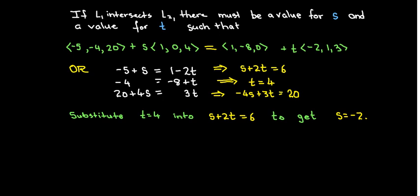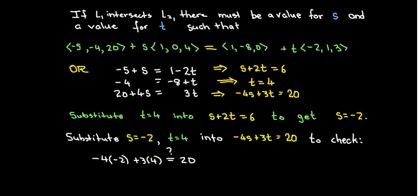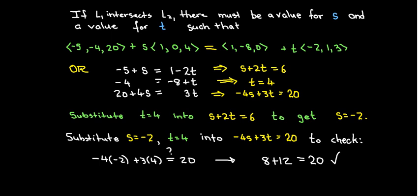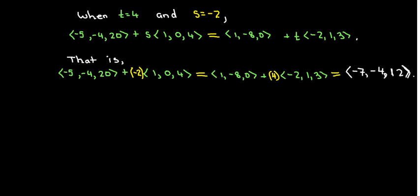I can't stop here. These values for s and t have to work for all three equations, so let me make sure they work in the third equation. I would take -4 times -2 plus 3 times 4. That gives me 8 plus 12, and sure enough, that equals 20. So when t equals 4 and s equals -2, the position vector for line 2 is the same as the position vector for line 1. What is that position vector? In both cases, it has components <-7, -4, 12>, meaning that the point of intersection is (-7, -4, 12).